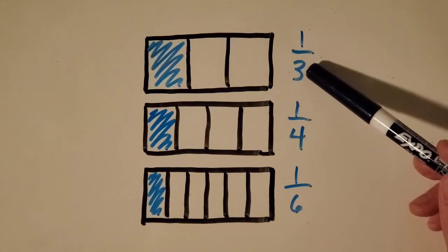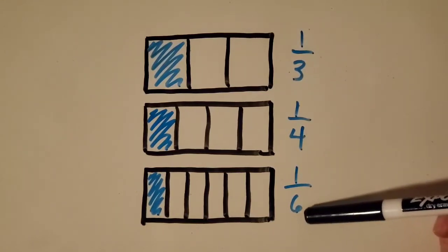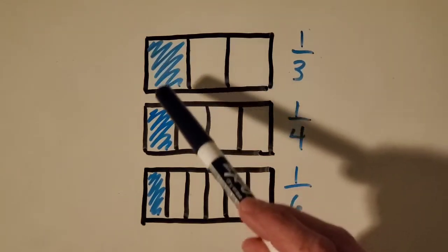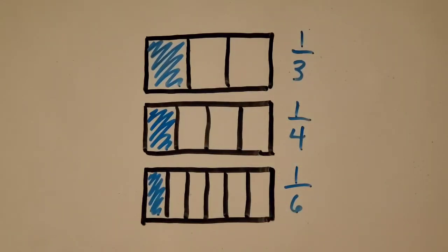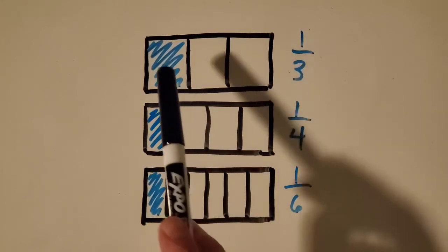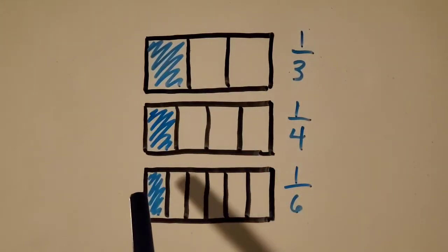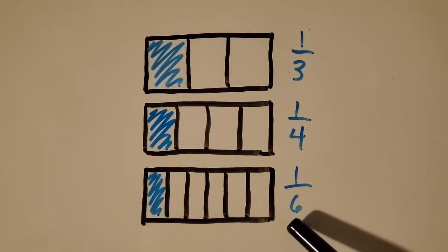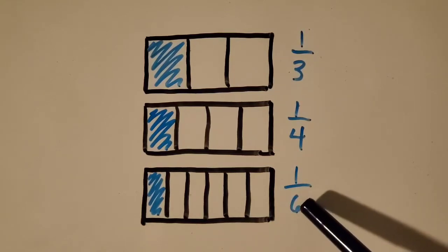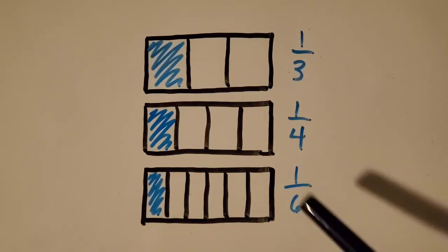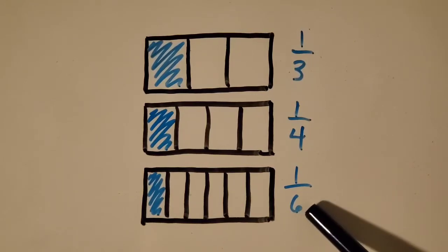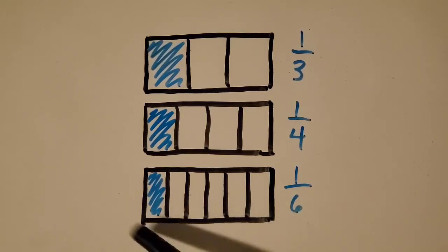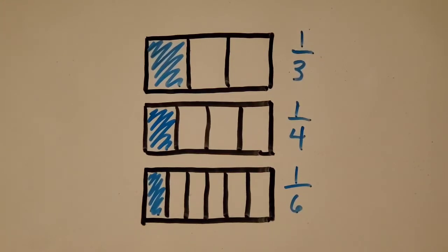As the denominator gets bigger, what's happening to the fraction size? Hopefully you said the fraction size is getting smaller as the denominator gets bigger. That's because if you have more pieces — the denominator is the total pieces — if you've got more pieces, they have to be smaller because you're cutting the same thing up into more pieces. So think about if you cut it into 12 pieces, it'd be a lot smaller.